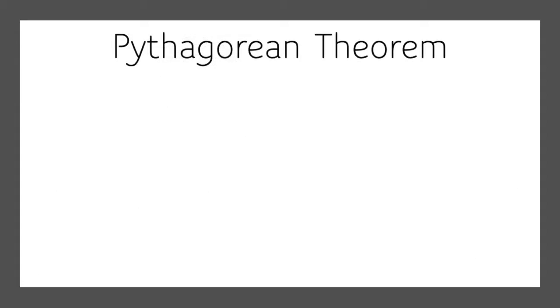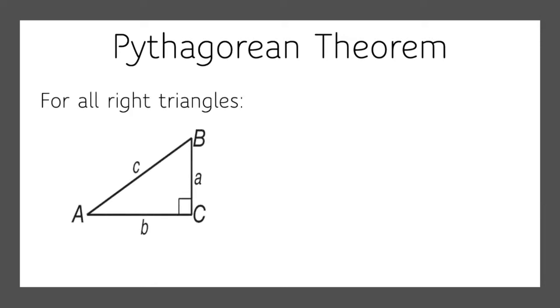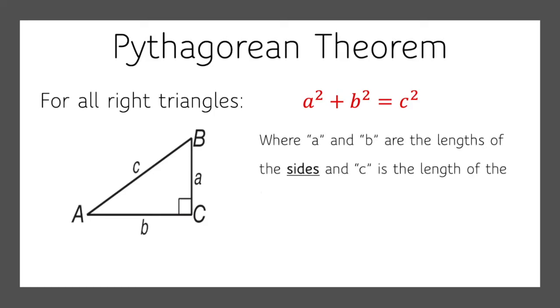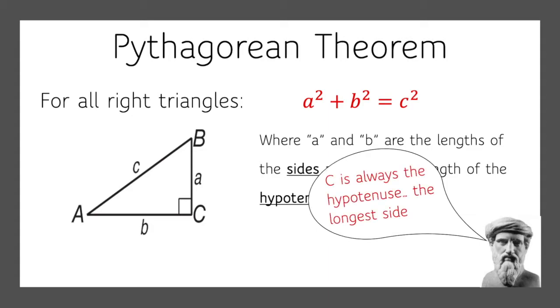So the Pythagorean Theorem works for all right triangles, like this one. It's a squared plus b squared equals c squared, where a and b are lengths of the sides, and c is the length of the hypotenuse. So we always say that c is the hypotenuse. It's the longest side. It's directly across from the right angle.